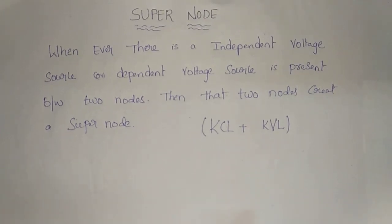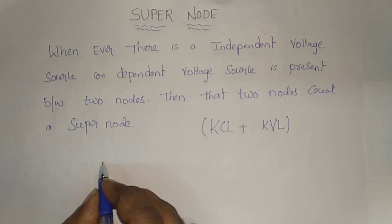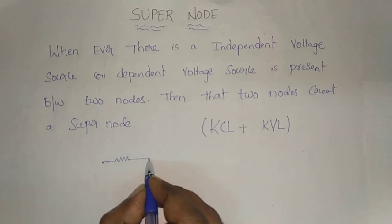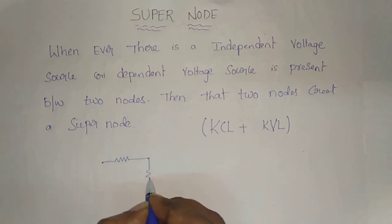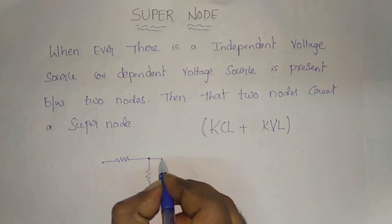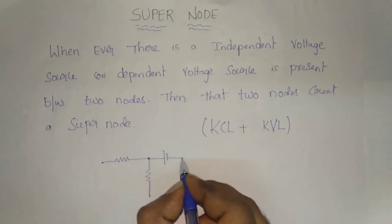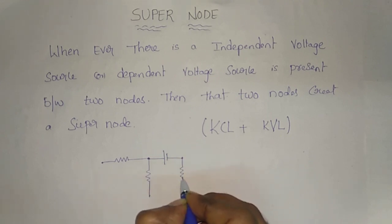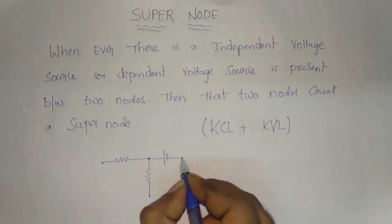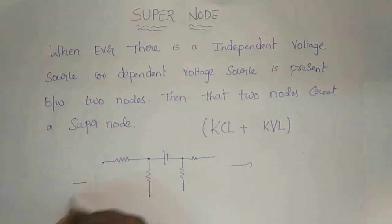So let's talk about the super node. This is a resistor. This is a resistor. This is a voltage source. This is a resistor. This is a resistor.